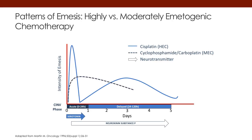This next curve shows the time frame and differences in emetogenic potential of chemotherapy — when emesis starts and when it stops. Platinum is biphasic: a lot of the acute potential — that 99 percent — occurs within the first 24 hours, but then there is a big delayed phase that peaks at days three to four and can stretch out to days five through nine.